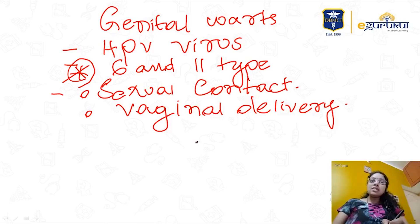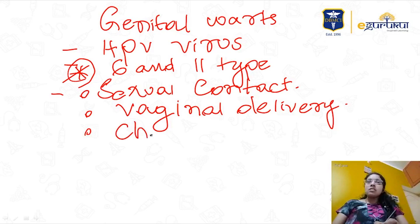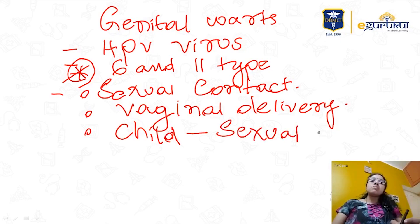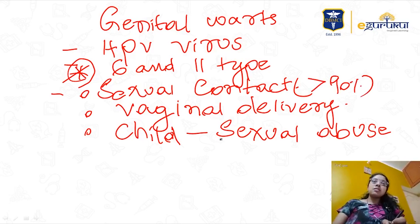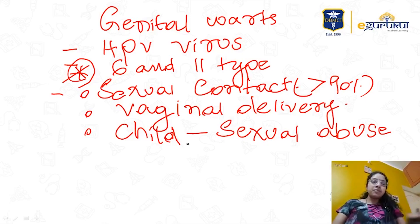If you find genital warts in a child, you should think of sexual abuse. More than 90% of cases are caused by direct sexual contact. The other less common cause is vaginal delivery — if the mother has the lesions and there is vaginal delivery, the baby can get lesions transmitted through vaginal secretions.